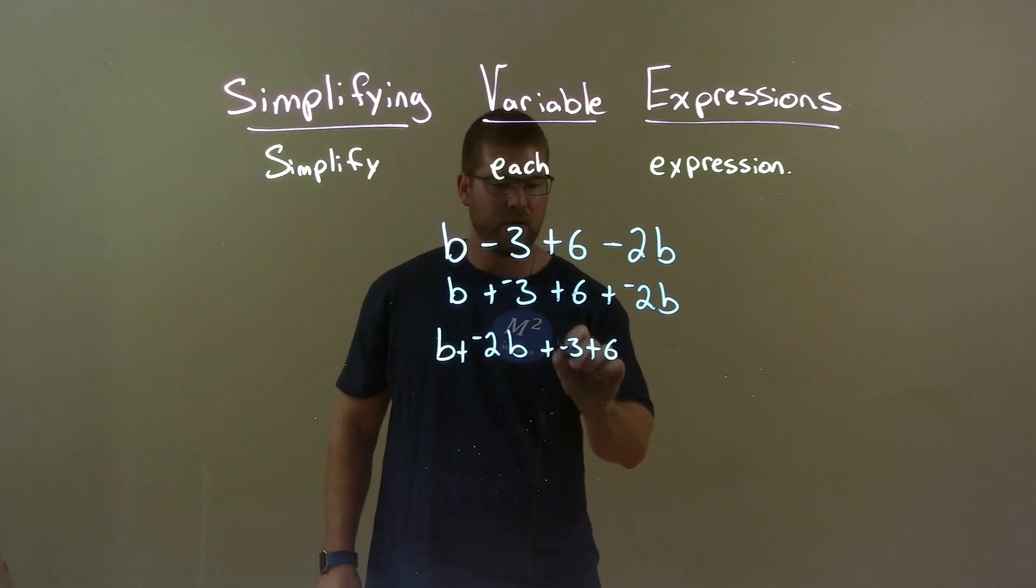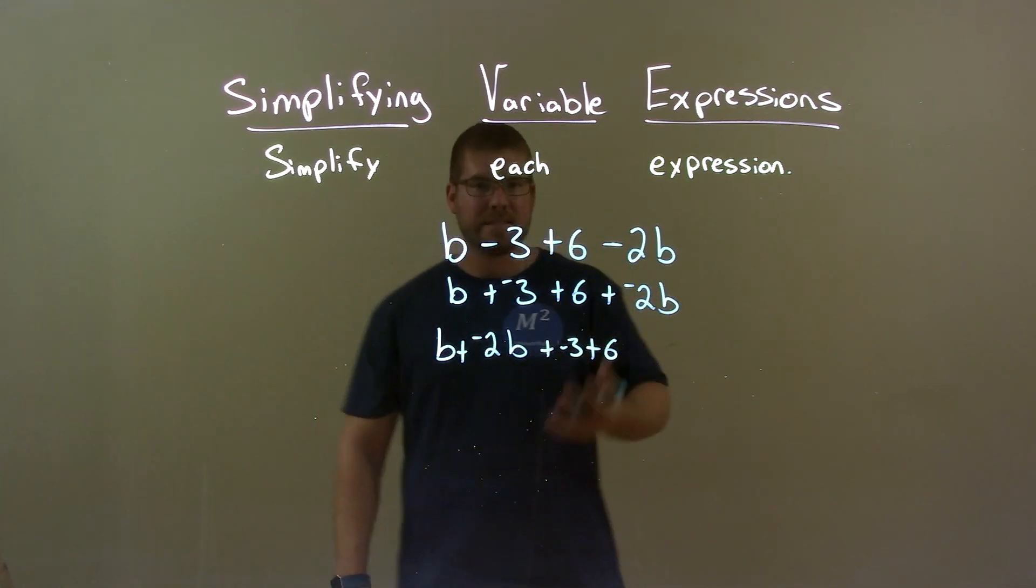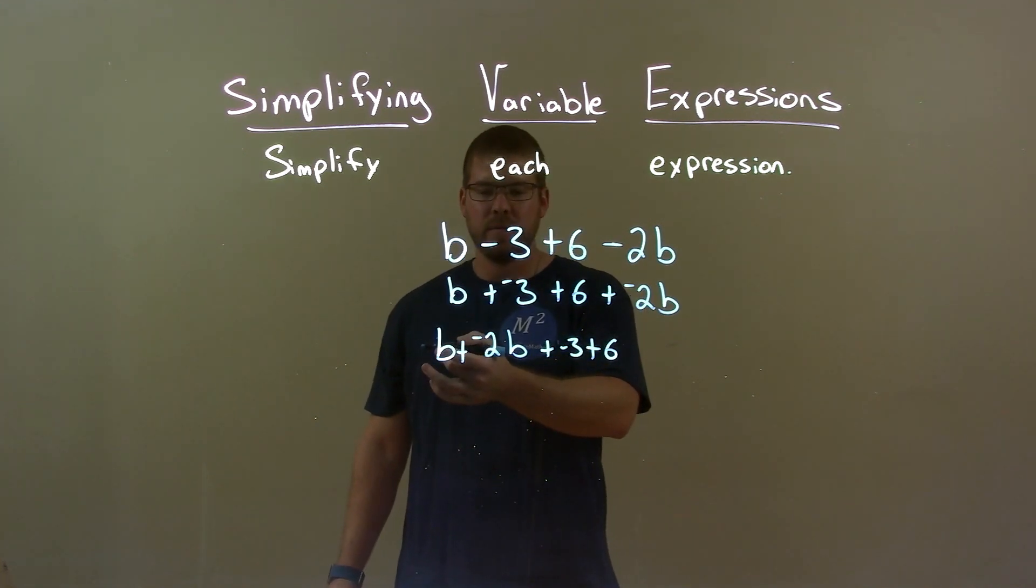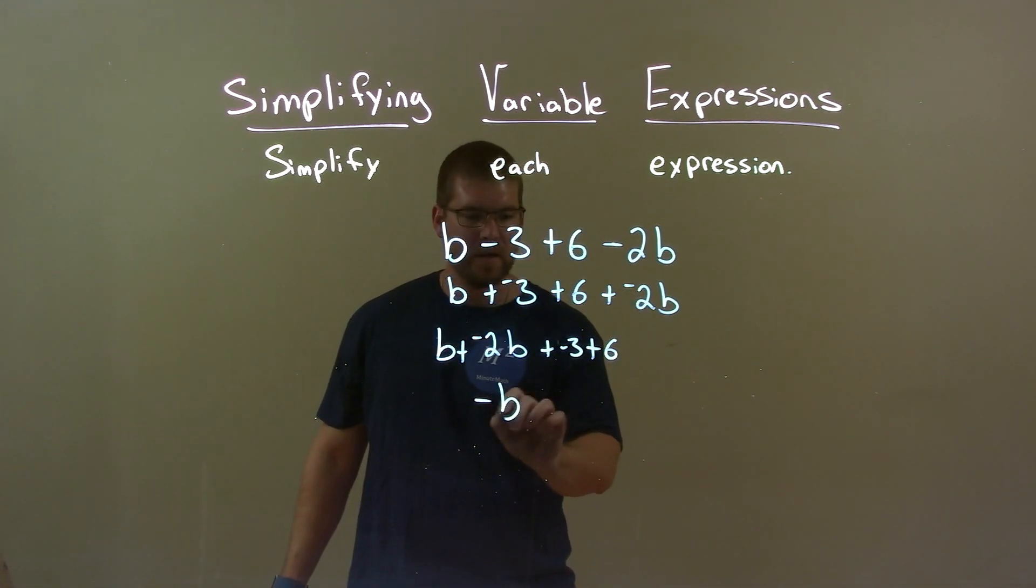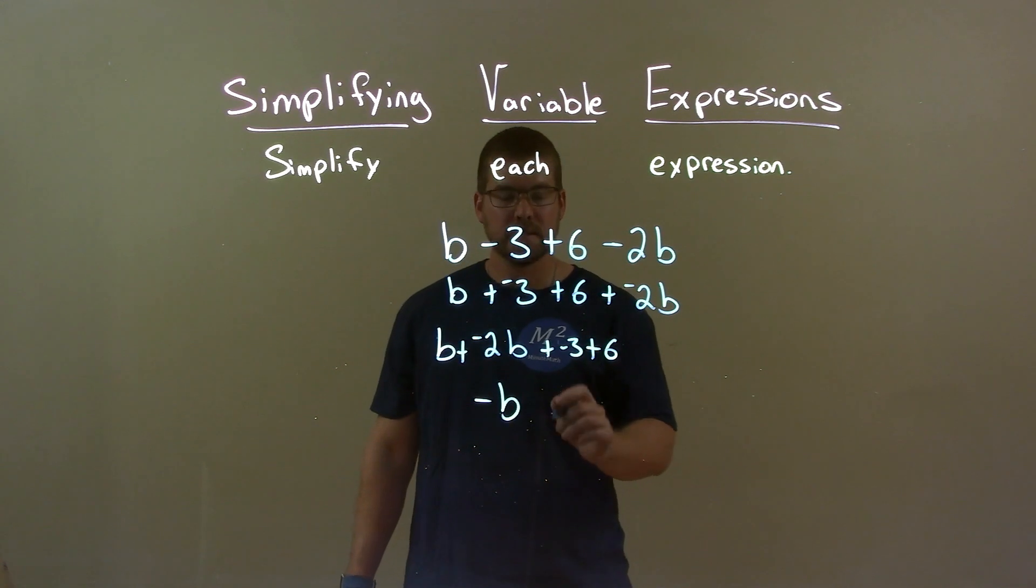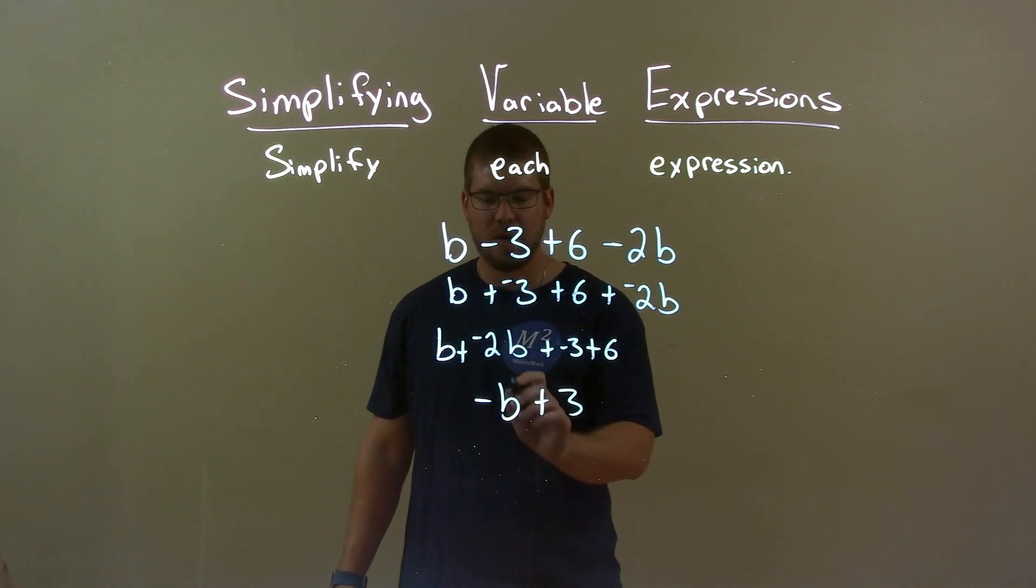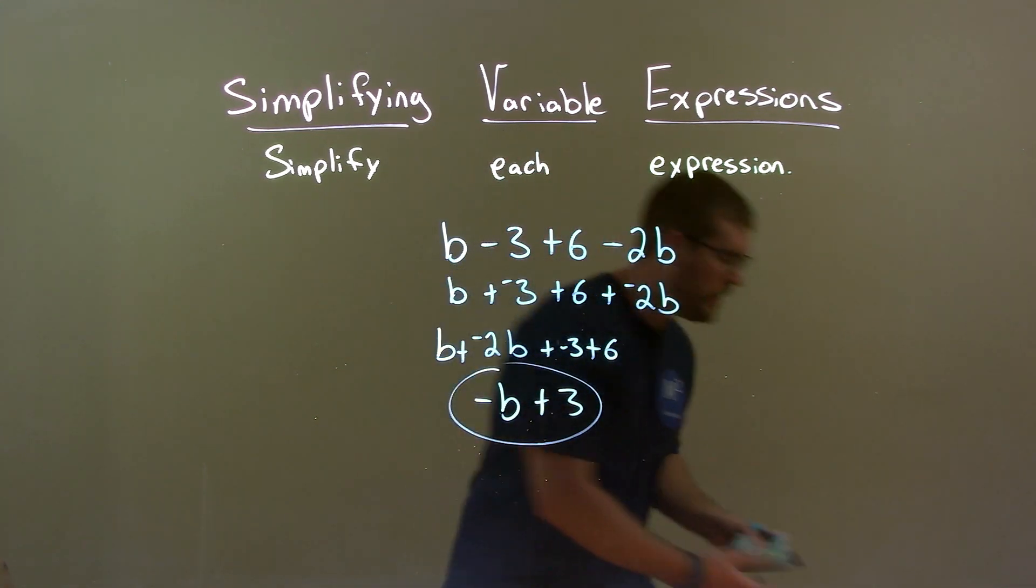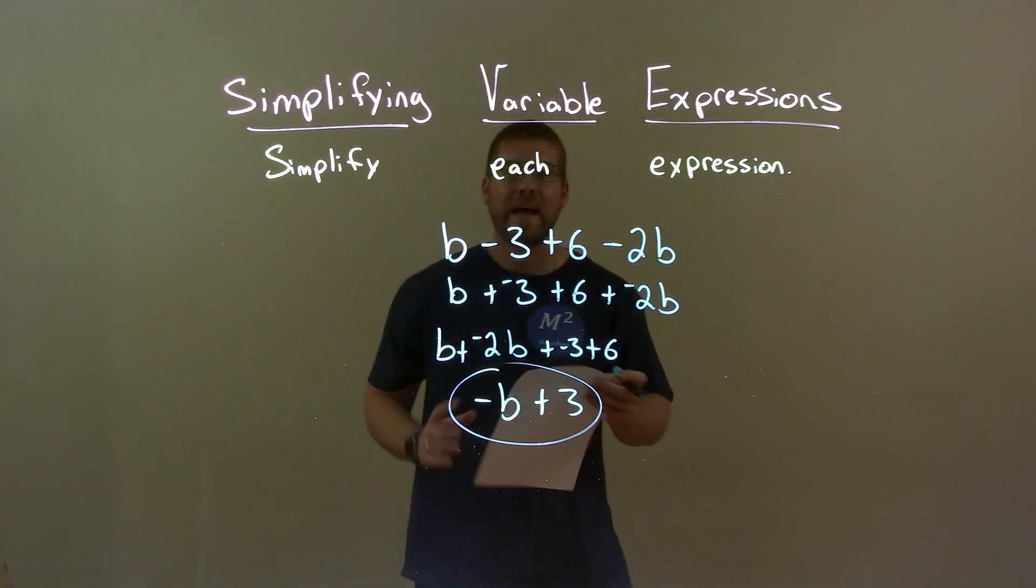All right, we've got negative 3 here. All right, so now let's simplify. Well, combine our like terms. b and negative 2b is a negative b and negative 3 plus 6 is a positive 3. So there we have a negative b plus 3 as our final answer.